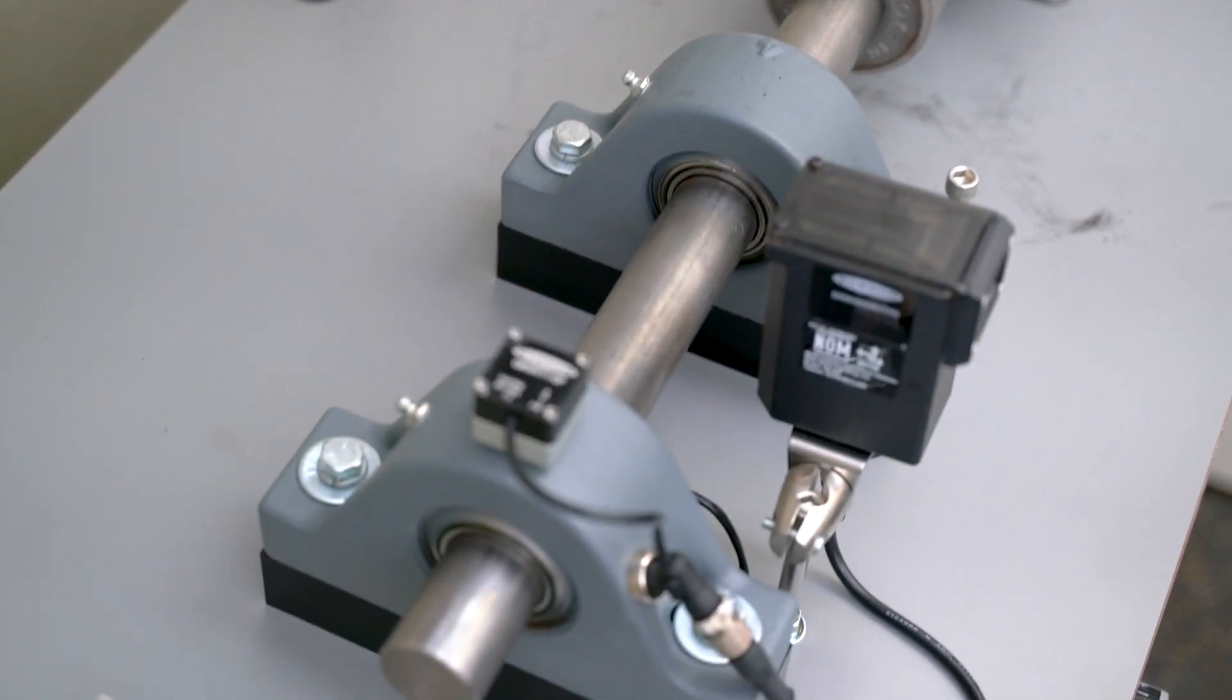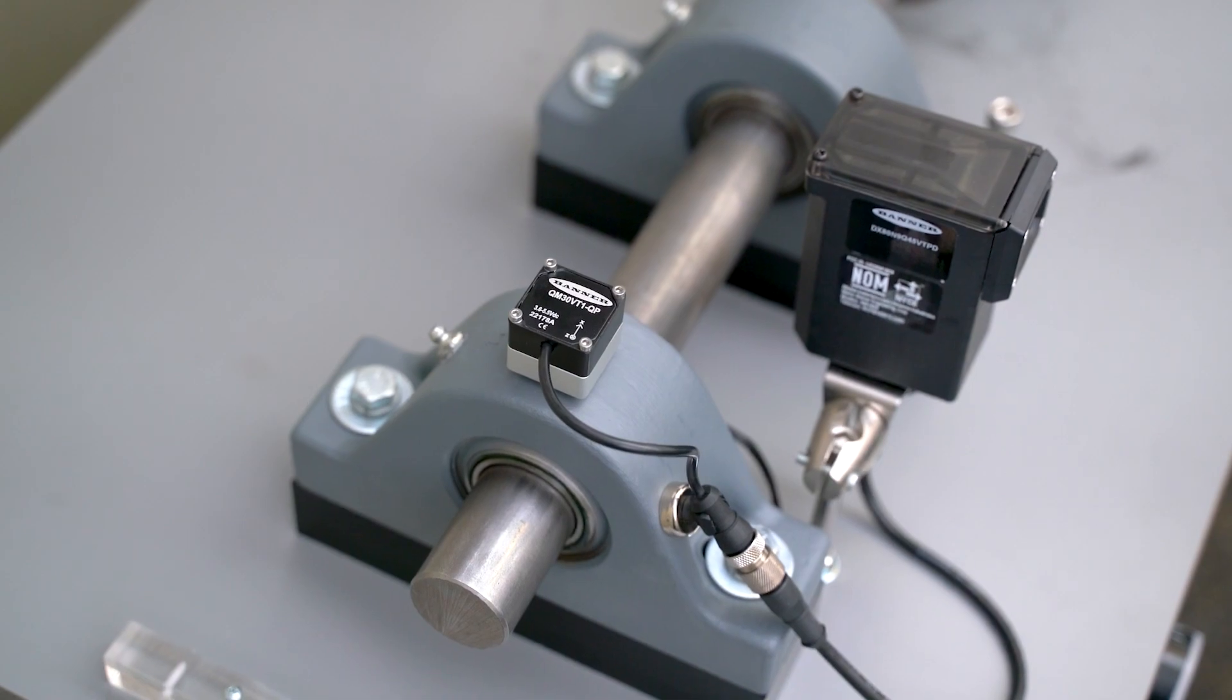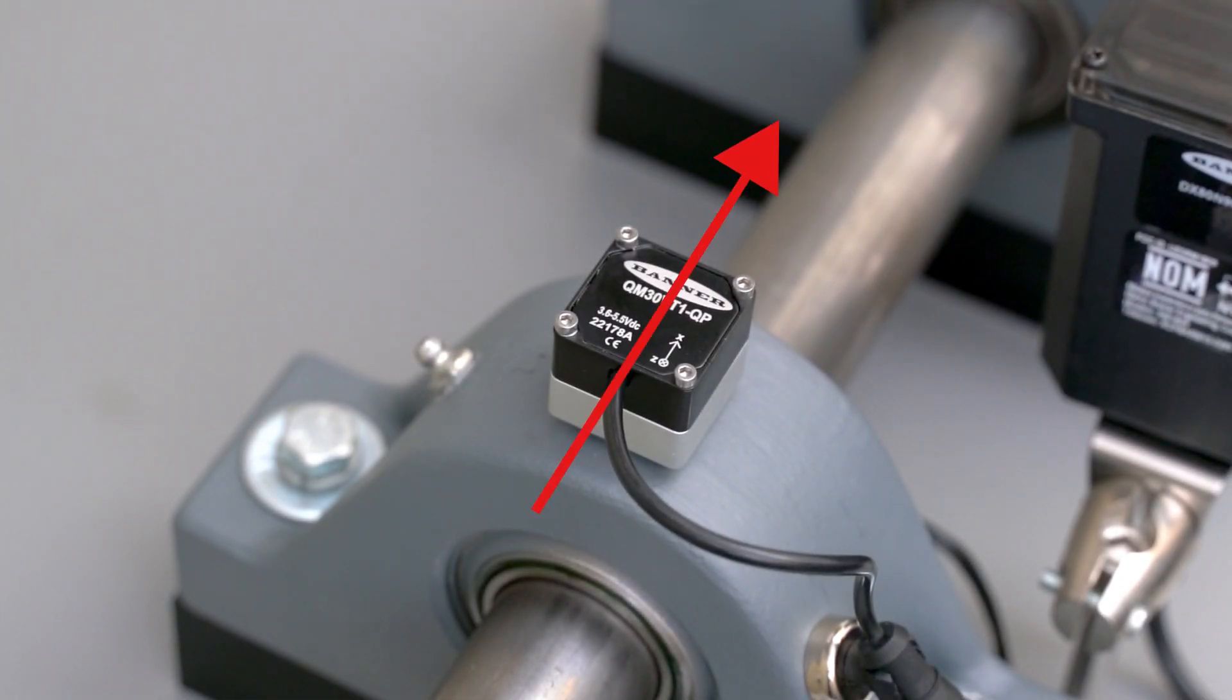When monitoring a pillow block bearing, the sensor should be mounted on top of the bearing with the x-axis parallel to the shaft passing through it.